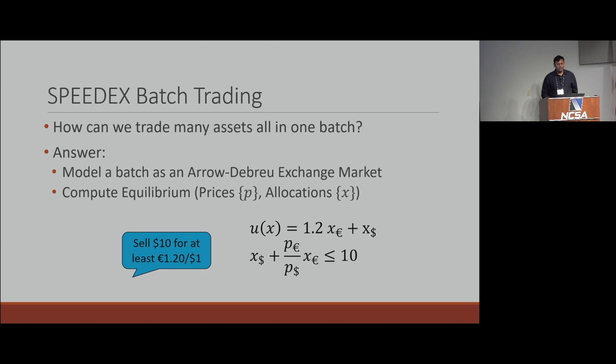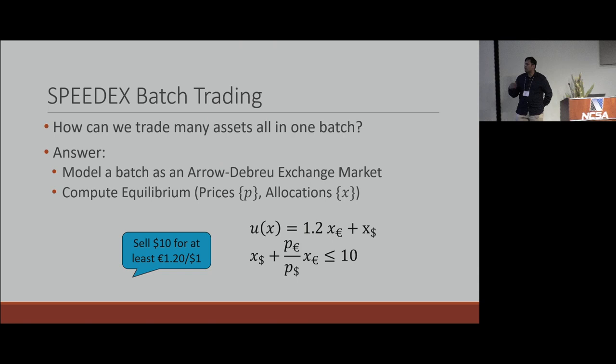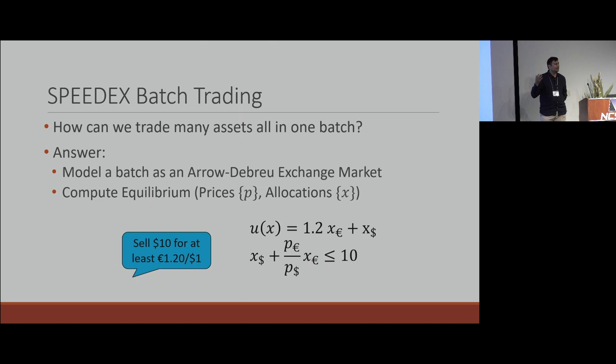How can we trade many assets all in one batch, where any order can be between any two assets with no reserve currency? The obvious answer is to model this as an Arrow-Debreu exchange market. What you do is compute equilibrium prices P and allocations X. These prices are in some phantom currency — there's no numeraire, you could have an arbitrary numeraire. For example, suppose I have an order which says: sell $10 at at least 1.2 euros per dollar.